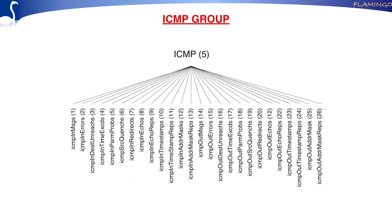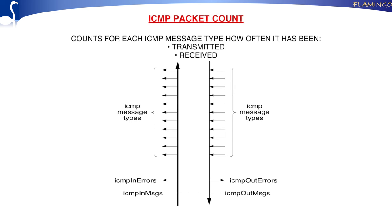The ICMP group is a long list of counters. ICMP is the Internet Control Message Protocol. You have one counter for the total incoming, a counter for errors, and then for the various ICMP message types there is a separate counter. Similarly for outgoing — for each type of ICMP message there is a separate counter, plus the number of errors and discards.